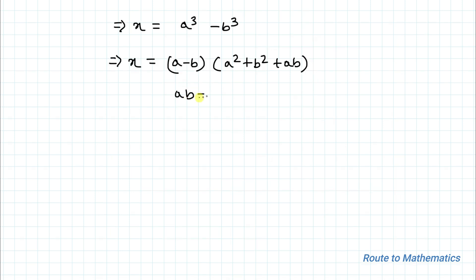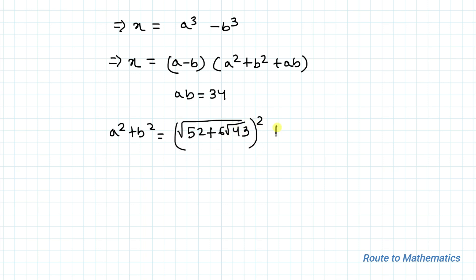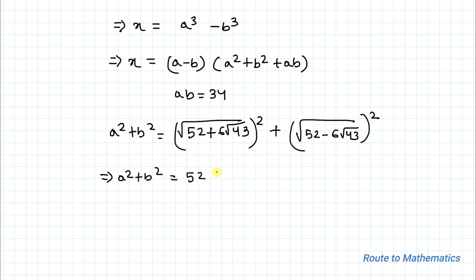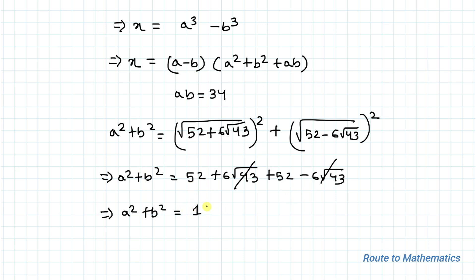Now let's find the value of A squared plus B squared. A squared equals (√(52 + 6√43))² = 52 + 6√43, and B squared equals (√(52 - 6√43))² = 52 - 6√43. After squaring, the radicals are eliminated. So A squared plus B squared equals (52 + 6√43) + (52 - 6√43). The ±6√43 terms cancel out, giving A squared plus B squared equals 104.